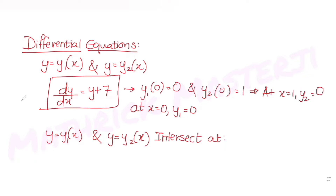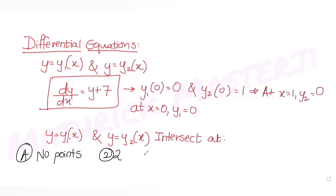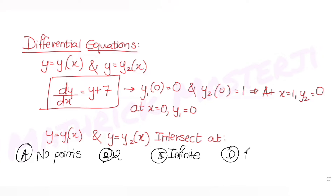The answer choices are: (A) at no points, (B) they intersect at two points, (C) they intersect at an infinite number of points, and (D) they intersect at one point. We need to figure out which answer choice is correct.